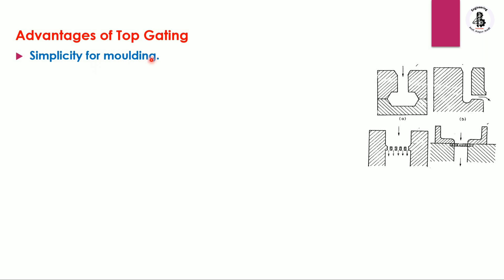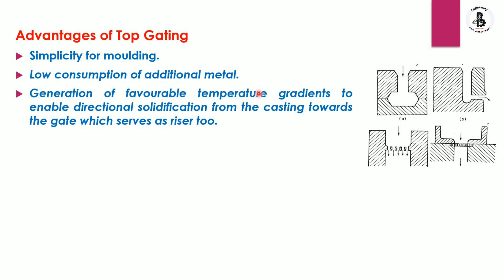The advantages of the top gate system include: first, simplicity of molding — you can easily make a sand mold using the top gate system. Second, low consumption of additional metal because the molten metal is poured directly into the mold cavity. Third, generation of favorable temperature gradients to enable directional solidification towards the gate, which also serves as a riser.